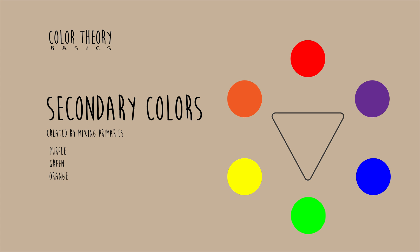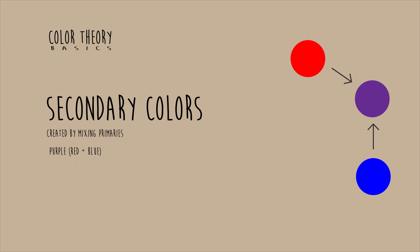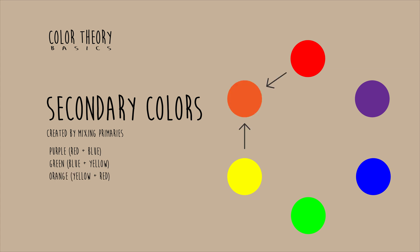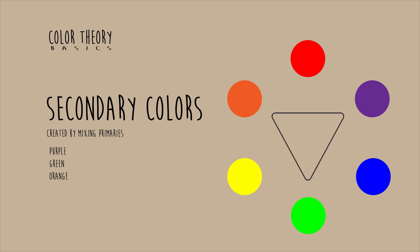From there you have secondary colors, which are made by mixing primary colors. When you mix red and blue you get purple, and that helps complete our color wheel. When you mix blue and yellow you get green, and when you mix yellow and red you get orange. This makes up all of your secondary colors.